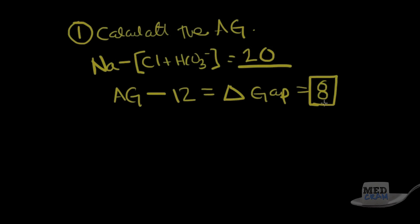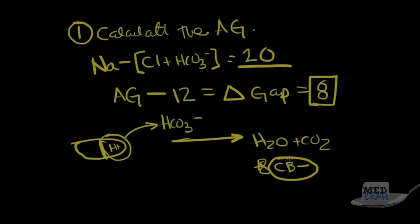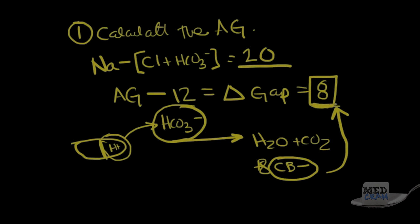The delta gap of 8 means there are 8 units of negatively charged conjugate base particles more than there should be. Those 8 acids released their protons, which combined with bicarbonate to form H₂O plus CO₂ plus a negatively charged conjugate base. So a delta gap of 8 means we should have lost 8 bicarbonate molecules.